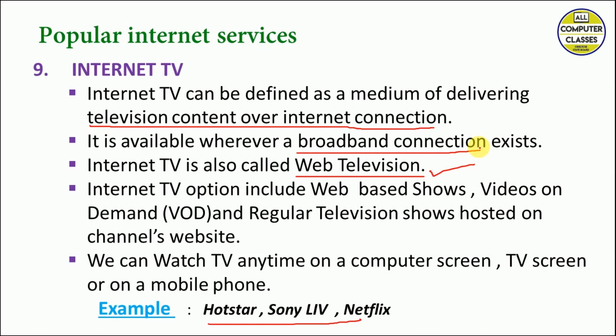Broadband is required because TV serials and videos consume a lot of data — a simple internet connection would not be enough. Internet TV options include web-based shows, videos on demand, and regular television shows hosted on channel websites. We can watch TV anytime on computer screens, TV screens, or mobile screens. Examples are Hotstar, Sony LIV, and Netflix — all of which you are already aware of since internet is popularly used 24 hours a day.